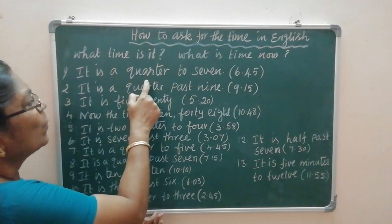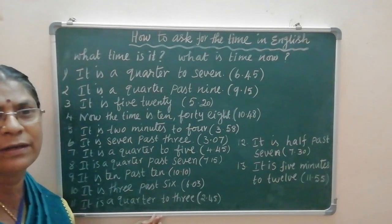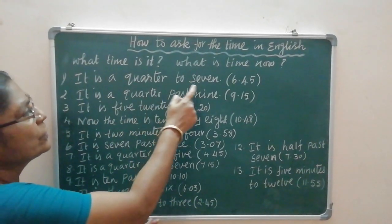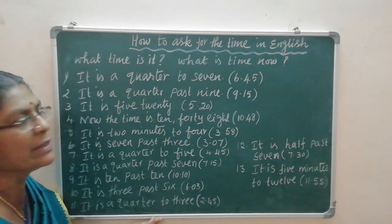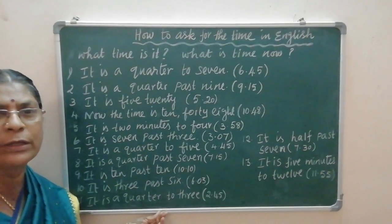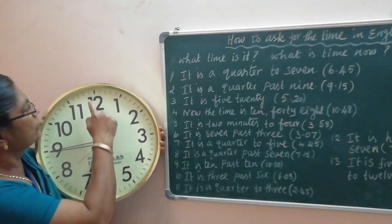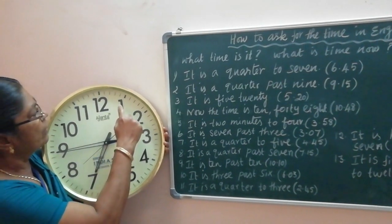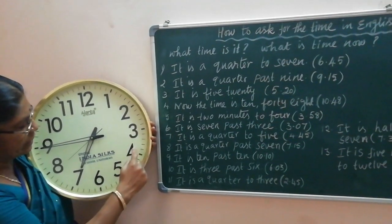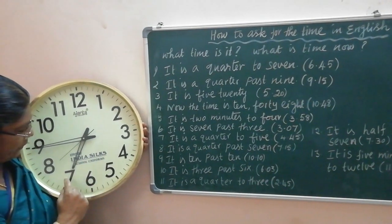It is a quarter to seven. That means the time is 6:45. Quarter to seven. So, counting: 5, 10, 15, 20, 25, 30, 35.